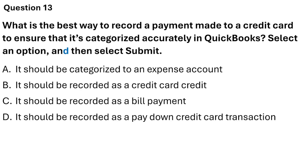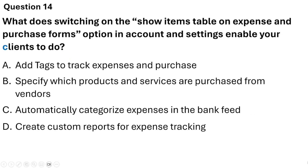Question 13. What is the best way to record a payment made to a credit card to ensure that it is categorized accurately in QuickBooks? The four options are: categorize it to an expense account, record it as a credit card credit, record it as a bill payment, or record it as a pay down credit card transaction. The correct answer is Option D — it should be recorded as a pay down credit card transaction.